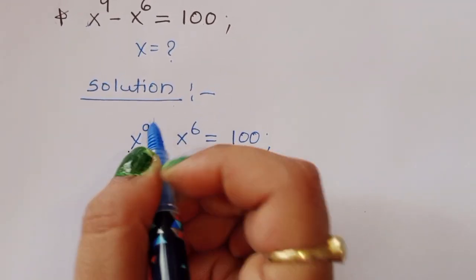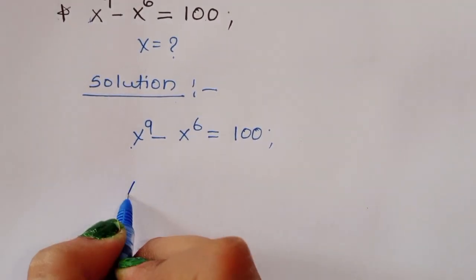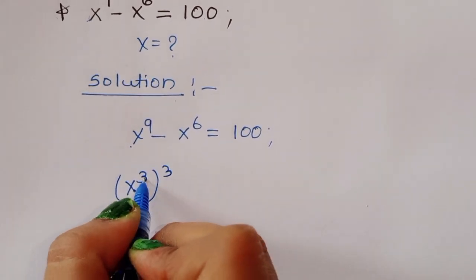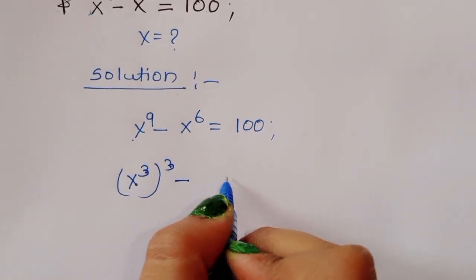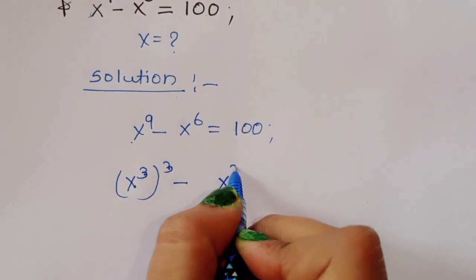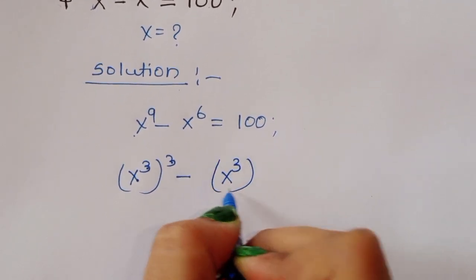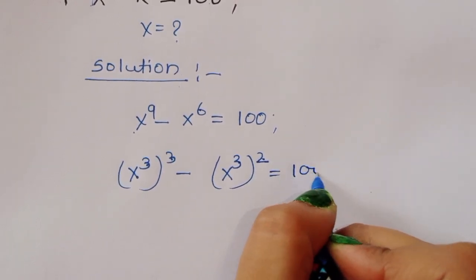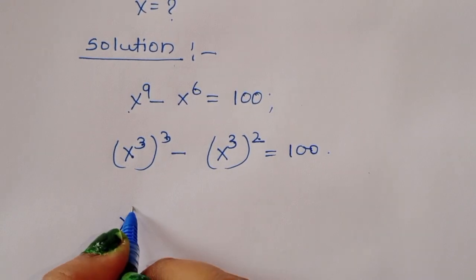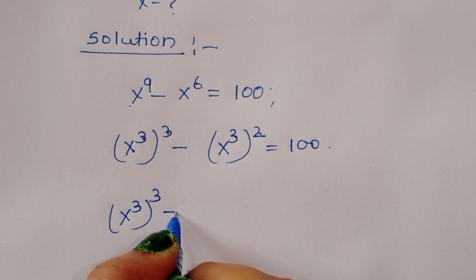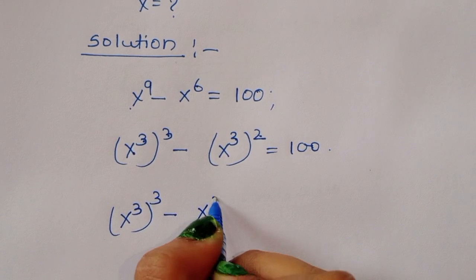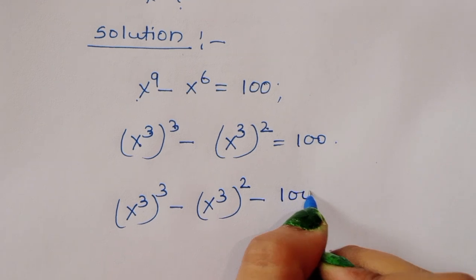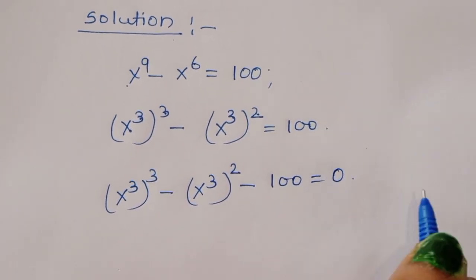We can write this as x power 9 equals x power 3 raised to power 3, since 3 times 3 is 9, minus x power 3 raised to power 2, since 3 times 2 is 6, equals 100. So: x power 3 cubed minus x power 3 squared minus 100 equals 0.